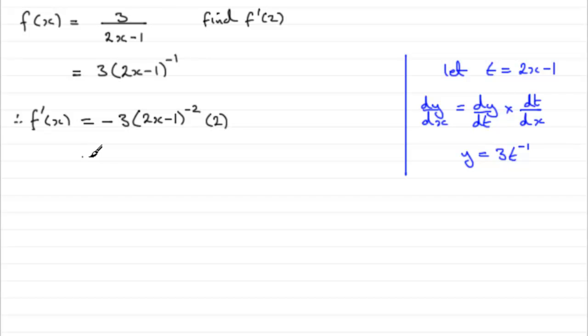What does this tidy up to be? Well, minus 3 times 2 is minus 6. And this is multiplied by 1 over 2x minus 1 all squared. So I could actually bring that to the minus 6 and write that as being over 2x minus 1 all squared.